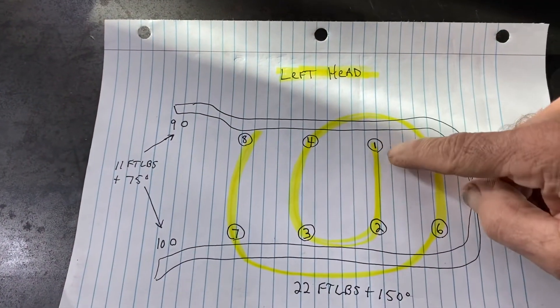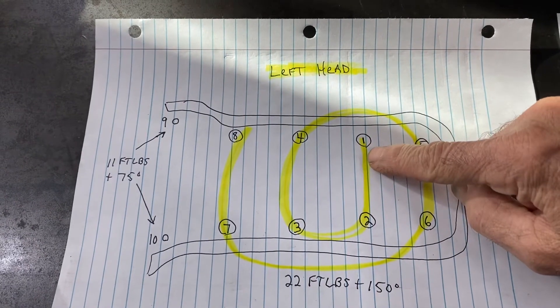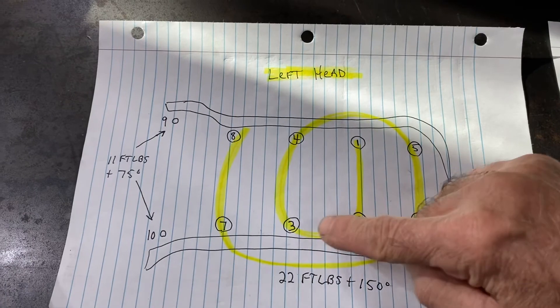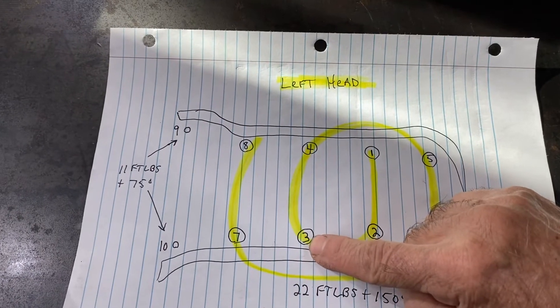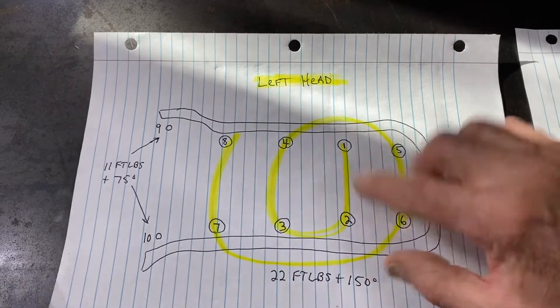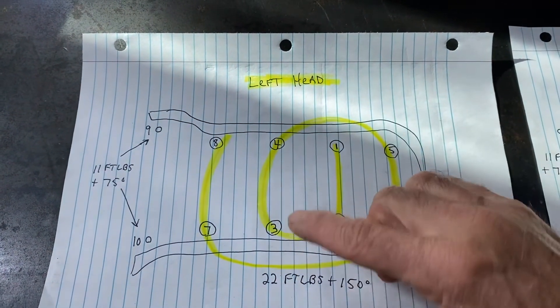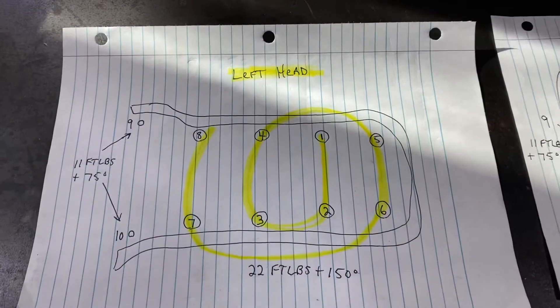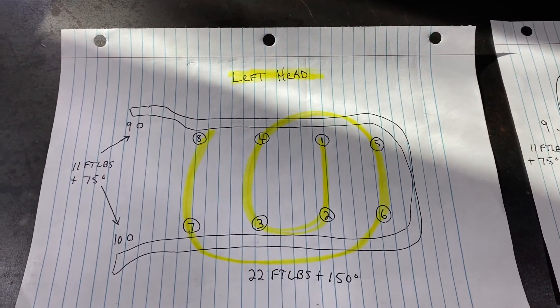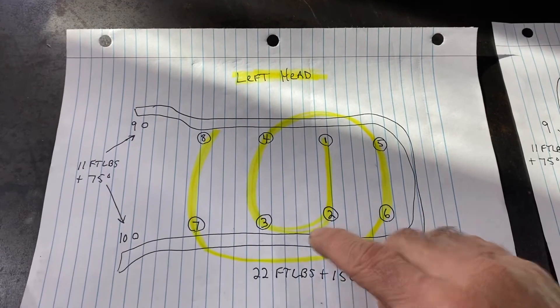On this left head, I did them all to 22 foot-pounds, then did this one to 150 degrees and this one to 150 degrees. When I got to this one it was dead loose because this one and this one crushed the gasket and then this one was dead loose. That left me in a real fix because you're not supposed to reuse the bolts or head gaskets.